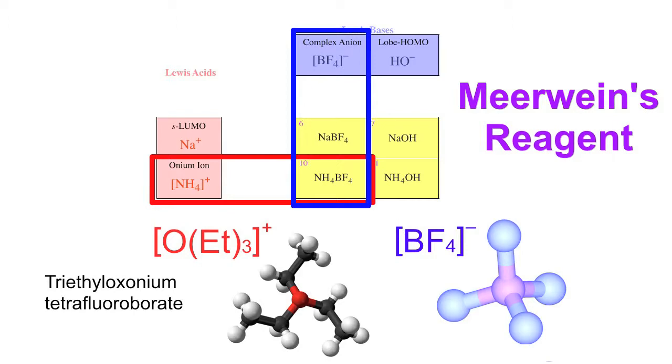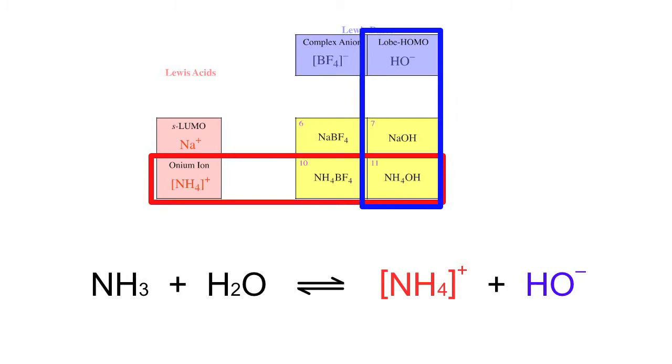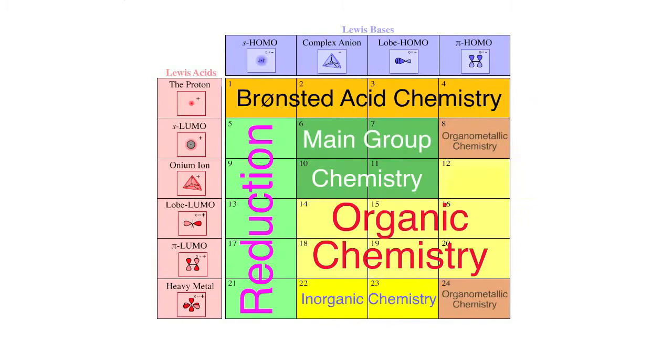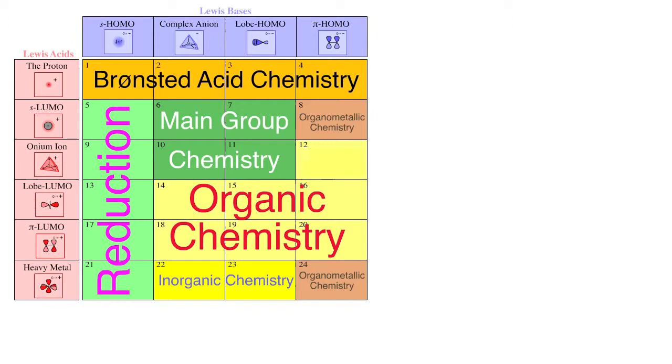If ammonia is added to water, an equilibrium is set up producing ammonium hydroxide, a type 11 Lewis acid-base complex. We're going to move our matrix to the left and up a bit to give us a bit more space.